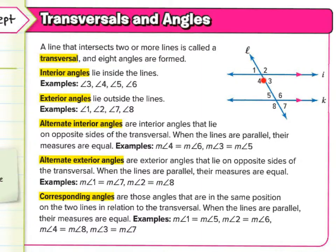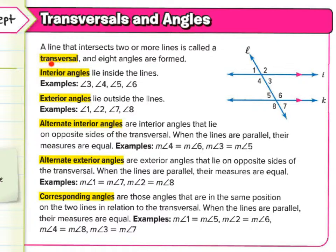And one transversal line. It's called a transversal line because it crosses more than one line at the same angle. Think of transportation or transnational — things that go from one place to another. A line that intersects two or more lines is called a transversal, and eight angles are formed.